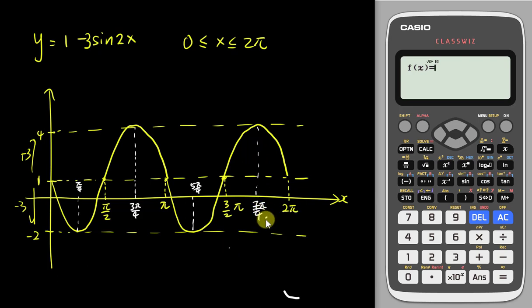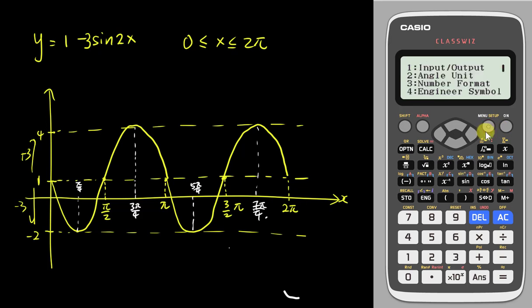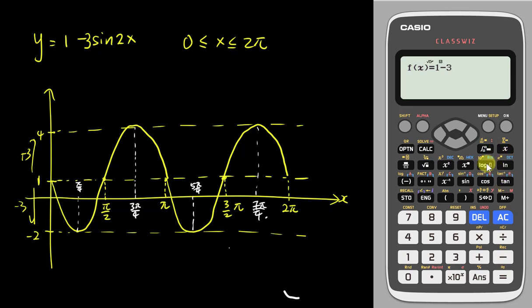Now I'll use the calculator to check whether my graph is correct. First, I need to make sure everything is in radian mode — press Shift, Menu, go into angle unit, and select radian. Then I insert the whole equation: 1 minus 3 sine 2x, and press enter.